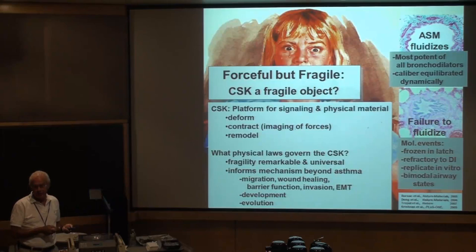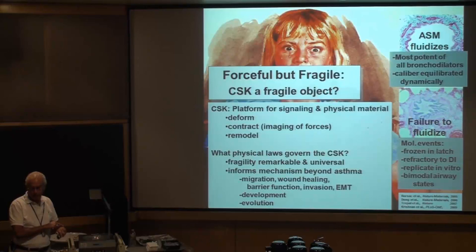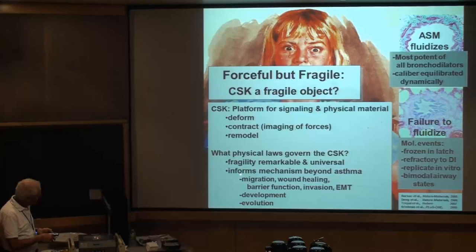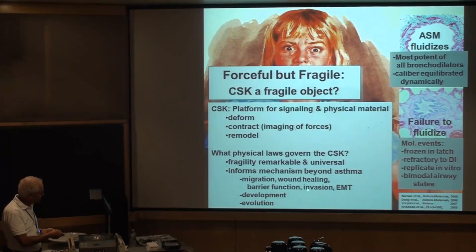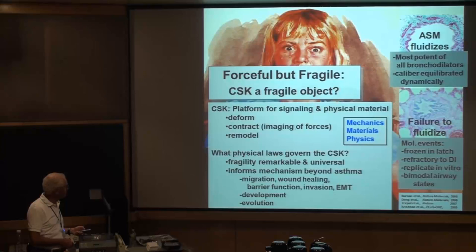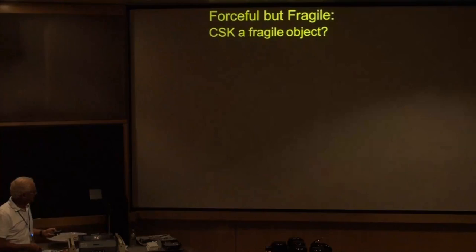One of the big questions we've focused on is: what are the physical laws that govern the cytoskeleton? From the point of view of material science or physics — we know Hooke's law for elasticity, Newton's laws for viscosity — how do cells behave? First of all, they're fragile, and this fragility turns out to be universal: every adherent cell type and most circulating cells have the same kind of generic behaviors, which are very strange and don't fit classical viscoelasticity. Understanding these laws matters for asthma, migration, wound healing, barrier function, invasion, epithelial-mesenchymal transition, and development.